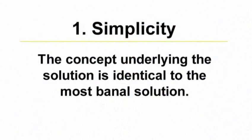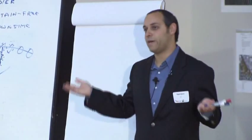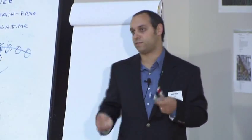The first one is called simplicity. Simplicity says that the concept underlying the solution is identical or very close to the most basic solution. In clearer terms, if you ask a child who never learned anything about engineering or physics what to do to solve the problem, the inventive solution is very close to the answer that child would give. In this case, they'd usually say: strengthen the pole. And now you have to find the ways to do it using other principles.